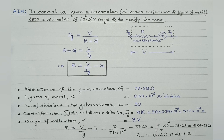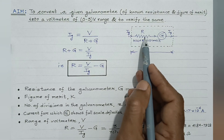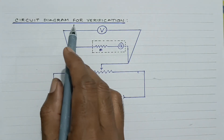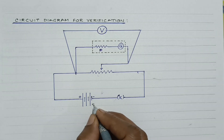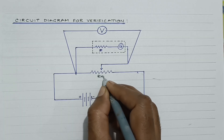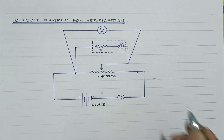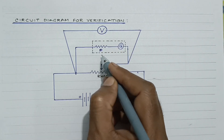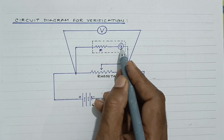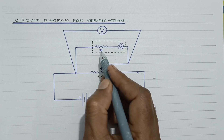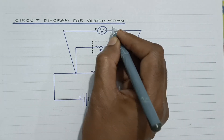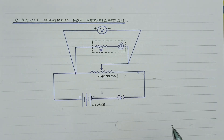This is the first result obtained. This high value of resistance is to be connected in series with the given galvanometer so as to convert it into a voltmeter of range 0 to 3 volt. This is the circuit diagram for the verification. There is a source, a one-way key, and a rheostat — a variable resistor whose resistance can be changed. The obtained voltmeter consists of the high resistance R connected in series with the galvanometer coil G, and this constitutes the voltmeter.